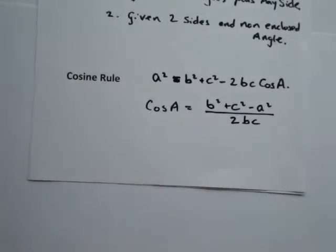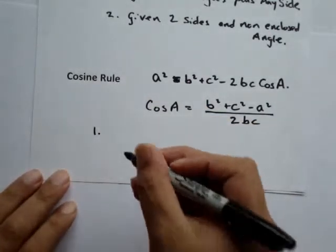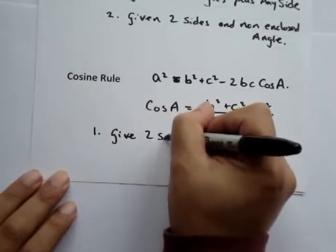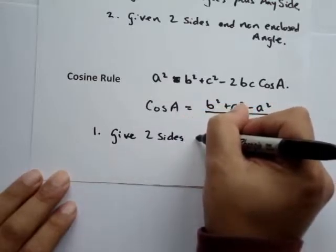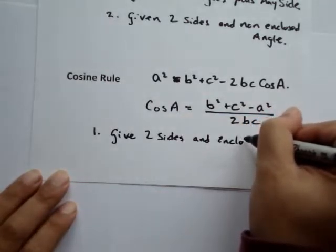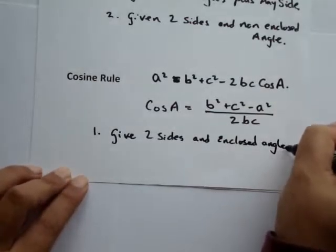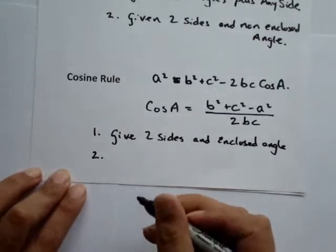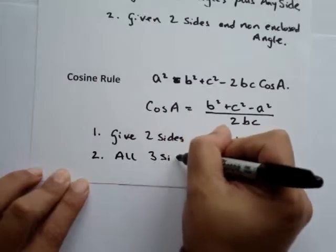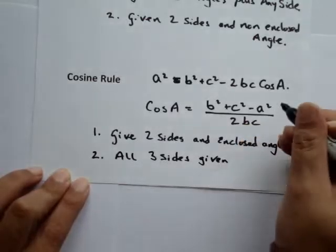Similarly to the sine rule, the cosine rule is applied in two cases. The first case is if you're given two sides and an enclosed angle. The second case is where you're given all three sides and no angle.